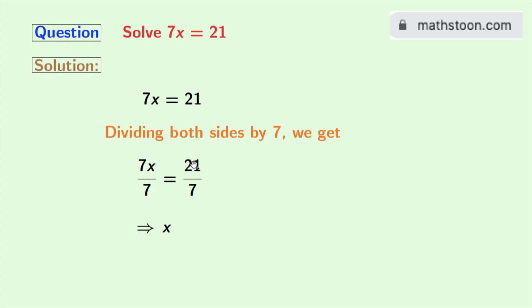And in the right hand side, we have 21 by 7 which is 3. So finally, we get x is equal to 3 as our answer.